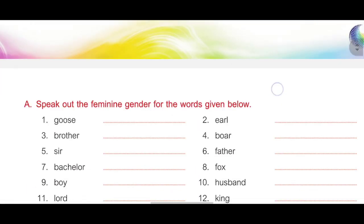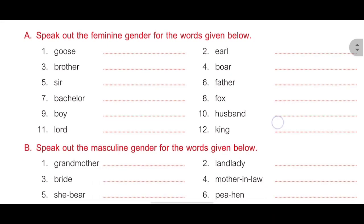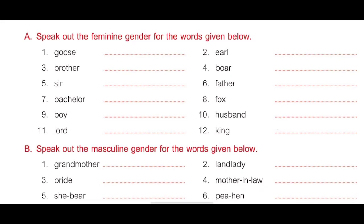Now let's move on to the exercises of this chapter. Exercise A: Speak out the feminine gender of the words given below. First, goose — answer is gander, G-A-N-D-E-R. Second, earl — answer is countess, C-O-U-N-T-E-S-S. Third, brother — answer is sister, S-I-S-T-E-R. Fourth, boy — answer is sow, S-O-W.